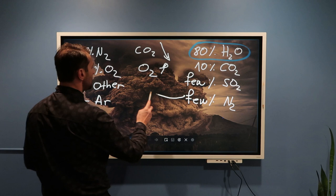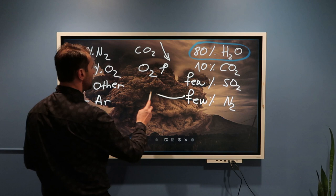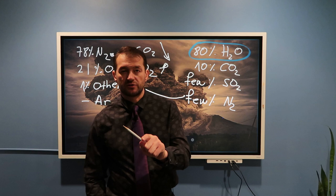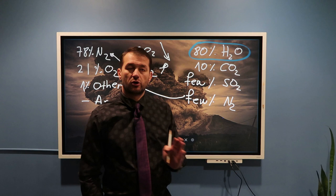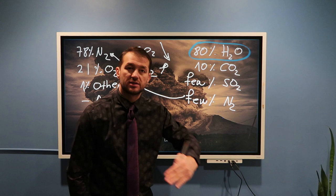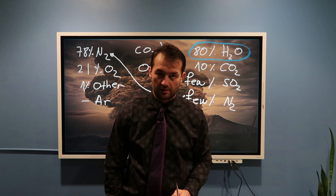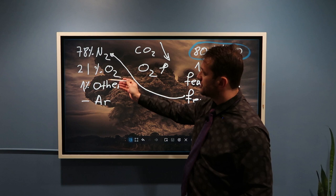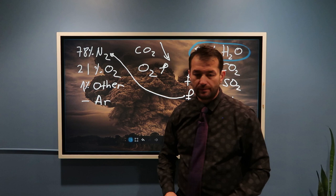How do we connect those few percentages of N2 from volcanic eruptions with the 78% N2 we have today? As I described in the previous video, N2 is not a very reactive gas. So those few percentages, over millions and millions of years, accumulated to become the 78% nitrogen we breathe today. And through this process, we ended up breathing 78% nitrogen, 21% oxygen, and 1% other gases — mostly argon.